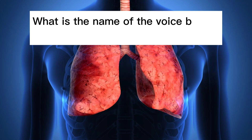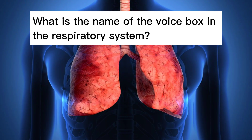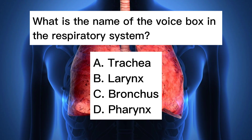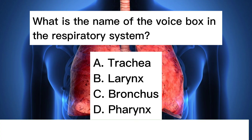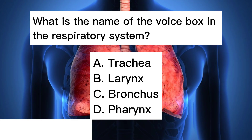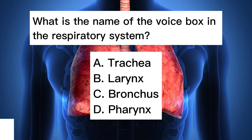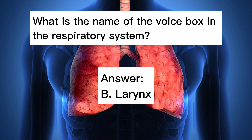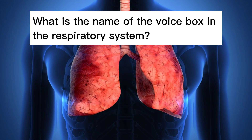What is the name of the voice box in the respiratory system? A. Trachea. B. Larynx. C. Bronchus. D. Pharynx. Answer: B. Larynx.